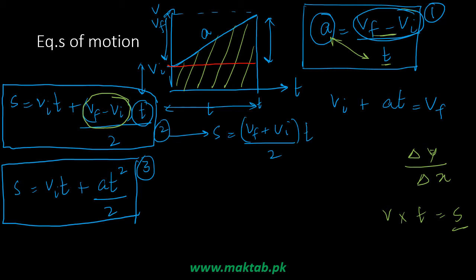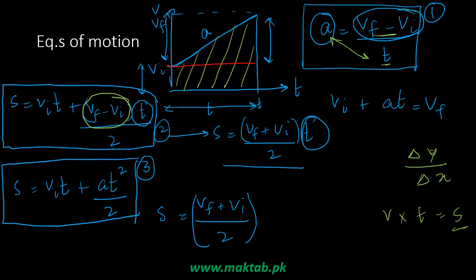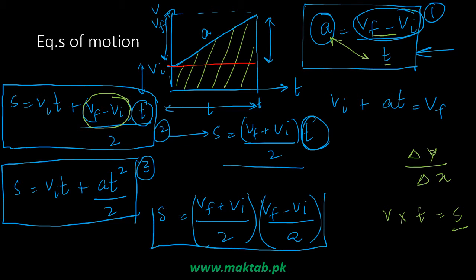To derive the fourth equation of motion, we use S = (VF + VI)/2 multiplied by t, and substitute t = (VF − VI)/a from the first equation. This gives us VF² minus VI² divided by 2a. So the fourth equation of motion is VF² = VI² + 2aS.